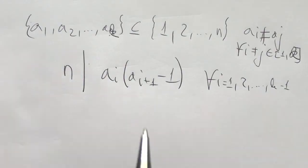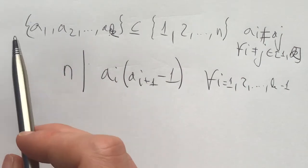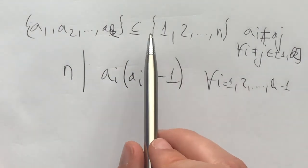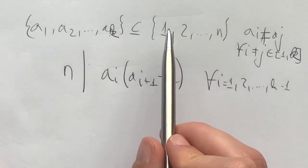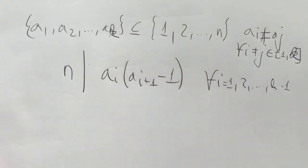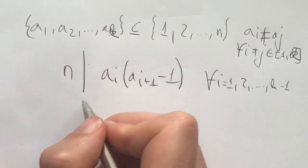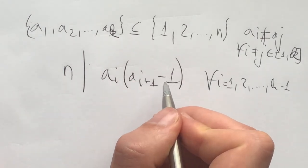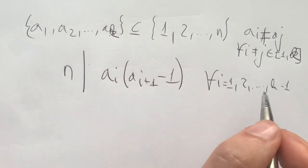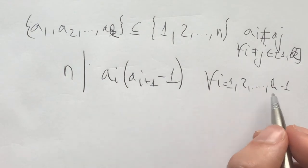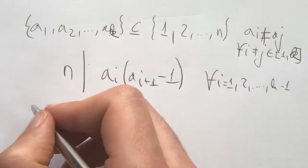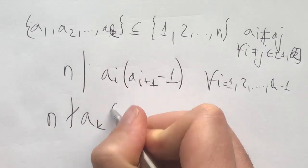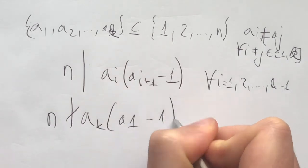In summary, we have k integers a1, a2 till ak. All of them are distinct and they are some numbers from 1 to n. Furthermore, we have this condition that n divides ai times ai+1 minus 1 for all i from 1 to k minus 1. And what we need to prove is that n does not divide ak times a1 minus 1.